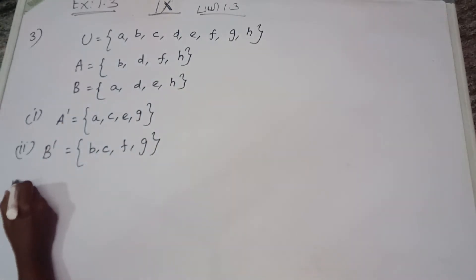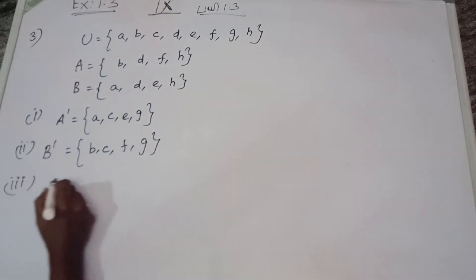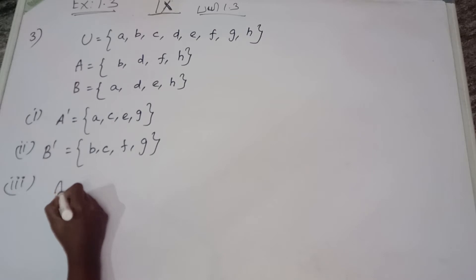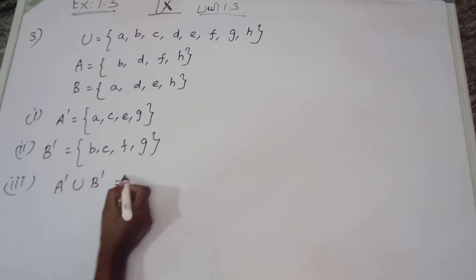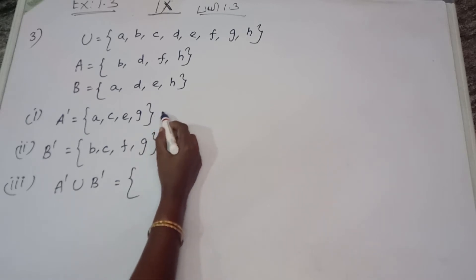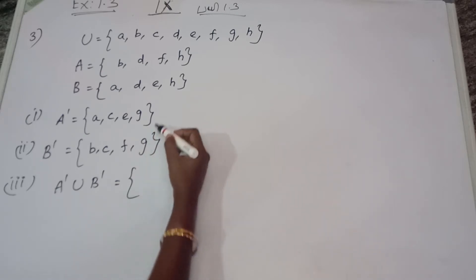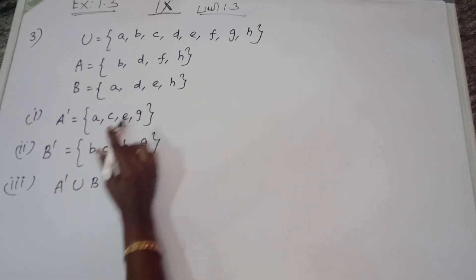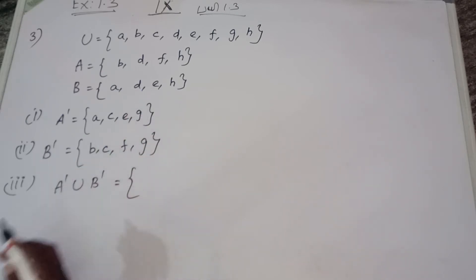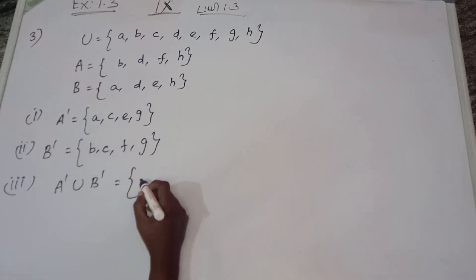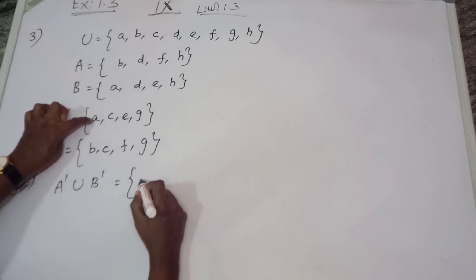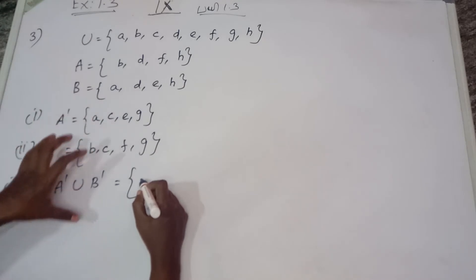The third sub-question is A dash union B dash (A' ∪ B'). A dash and B dash — we already have A dash and B dash. You have to write the elements in both A dash and B dash.